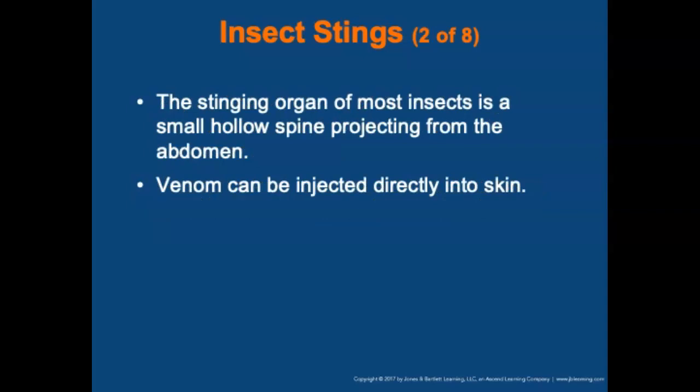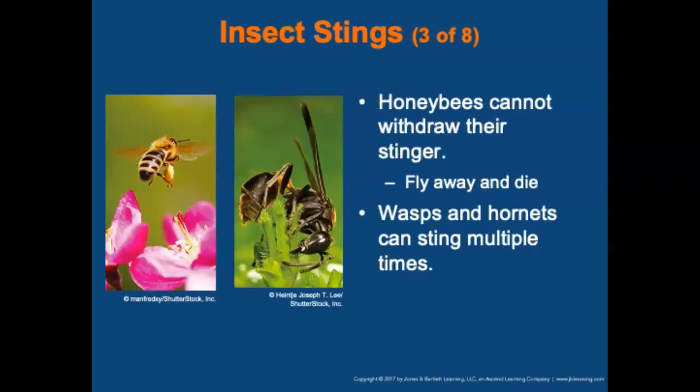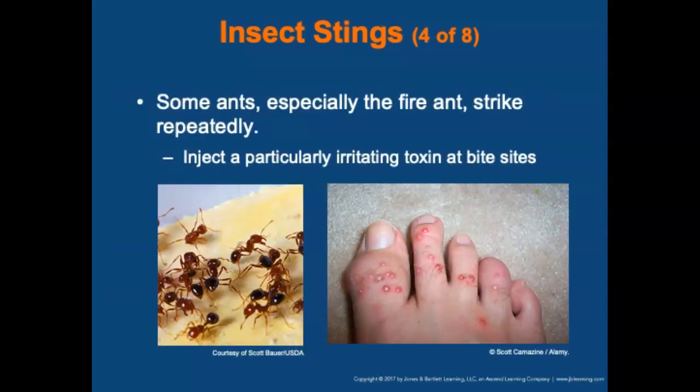The stinging organ of most insects is a small, hollow spine projecting from the abdomen, and venom can be injected through it directly into the skin. Honeybees cannot withdraw their stinger — the honeybee flies away and dies, but if the stinger is not removed, it can continue to inject venom for up to 20 minutes. Wasps and hornets can sting multiple times and do not die after stinging. Some ants, especially the fire ant, also strike repetitively, often injecting a particularly irritating toxin at the bite sites.